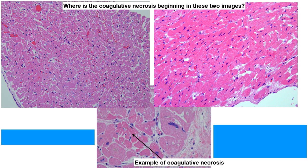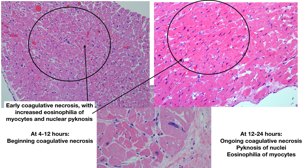On this slide, where is the coagulative necrosis beginning in these two images? There's early coagulative necrosis — you can see roughly where the areas are circled. You can see hyper-eosinophilia of the cardiac myocytes and some pyknosis or shrinkage of the nuclei. At the bottom, it shows an example of fairly well-developed coagulative necrosis. At 4 to 12 hours, you see beginning of coagulative necrosis, and at 12 to 24 hours, you see ongoing coagulative necrosis, pyknosis of nuclei, and eosinophilia of myocytes.